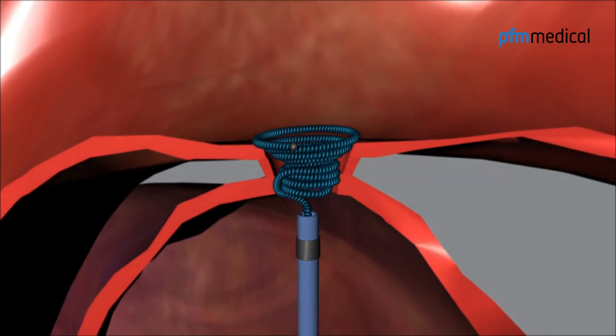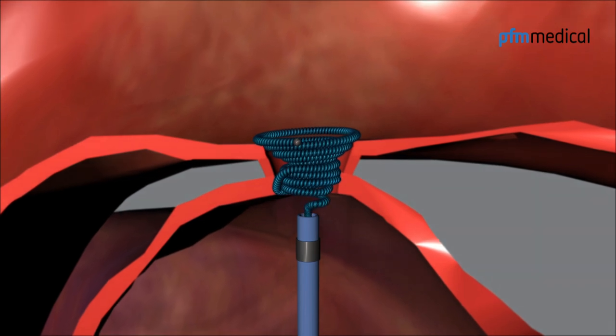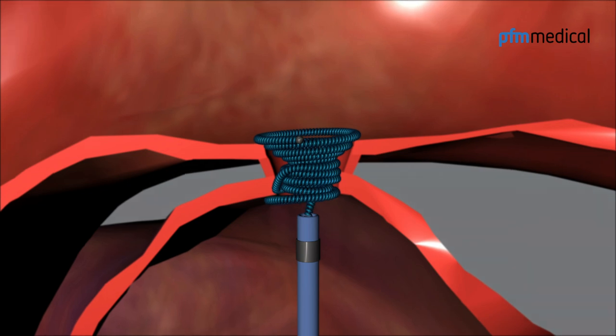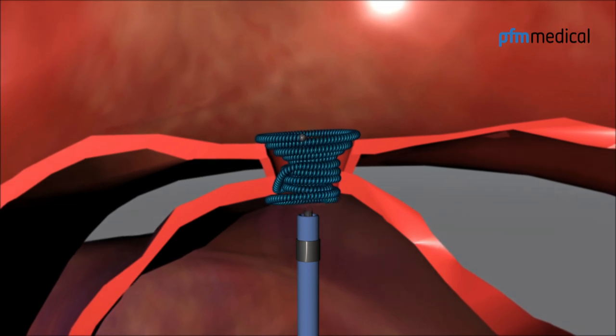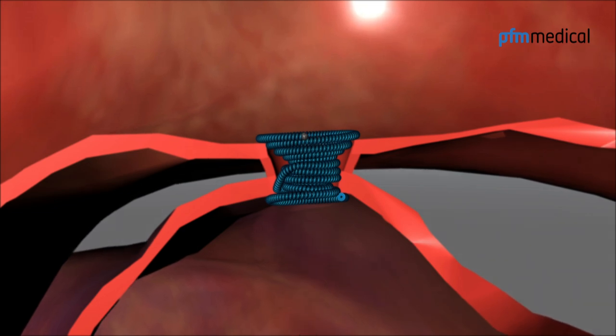The last one or two loops are configured on the pulmonary side of the ductus, anchoring the coil on the pulmonary side. At this point the coil is outside the catheter. The rotation handle is used for release. The implantation catheter and delivery system are then removed.